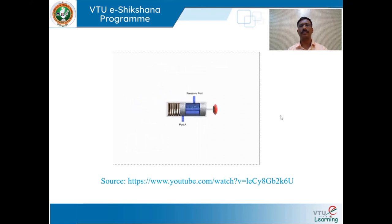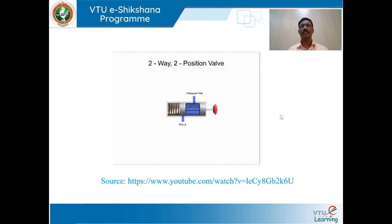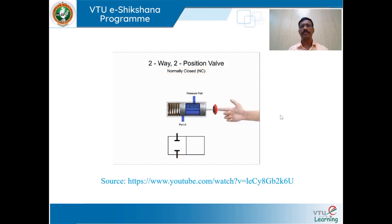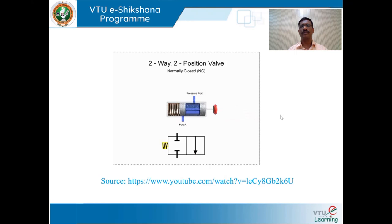Here is a similar two-way two-position valve. In the normal non-actuated position, both ports are blocked, making it a normally closed valve. When actuated, fluid flows from the pressure port to port A. A spring returns the valve to its normally closed position and a push button actuates it to the open position — making this a two-way, two-position, normally closed, spring return, push button operated valve.